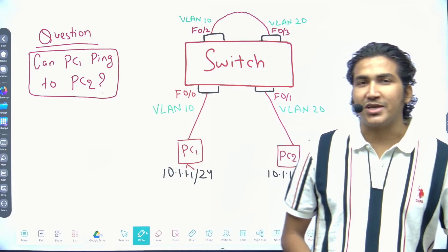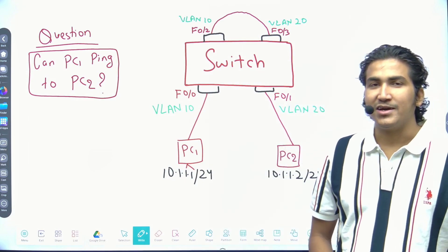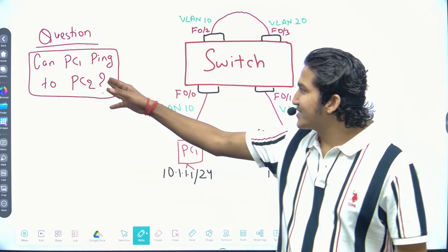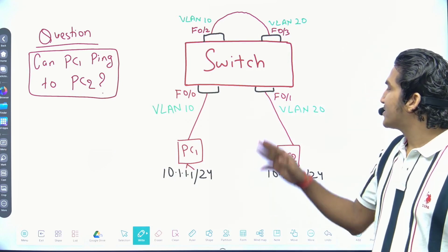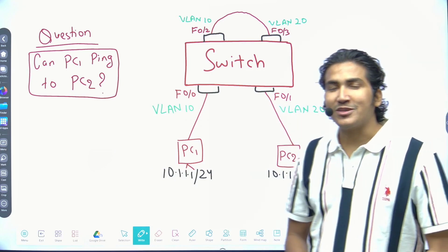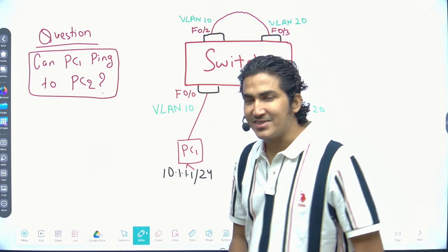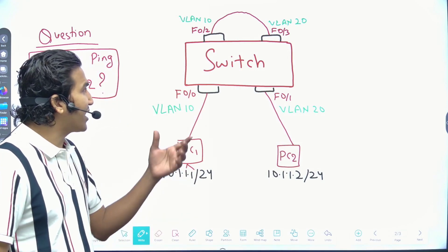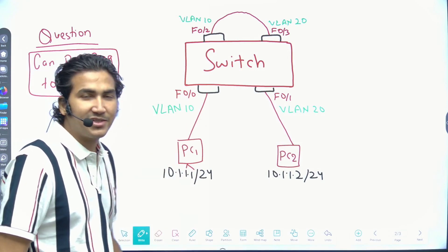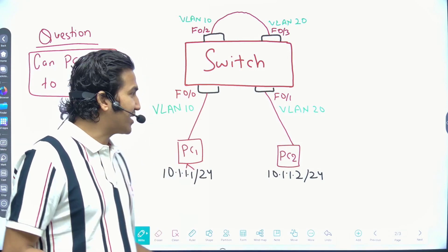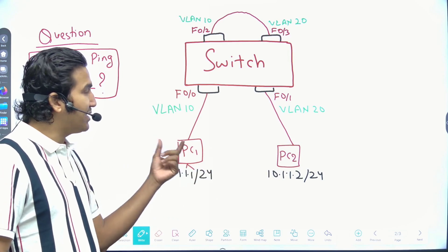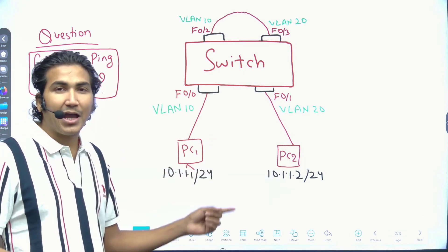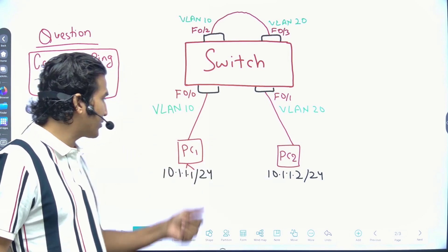Welcome to scenario number eight. Today's question is very interesting, very logical, and very conceptual. In this scenario there is one switch connected with two PCs in different VLANs, but both have IPs from the same subnet.